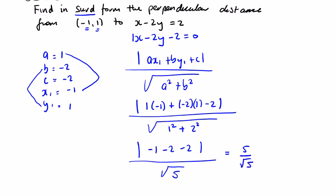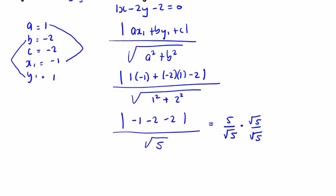In surd form, we normally want to rationalise. Multiplying top and bottom by root 5 over root 5, we get 5 root 5 on top and 5 on the bottom. So our answer is just root 5.